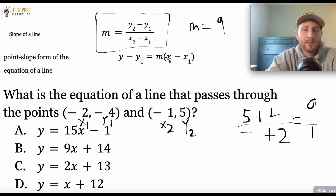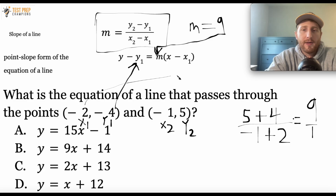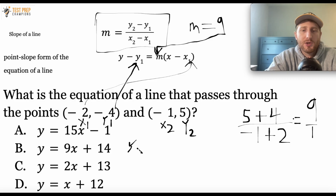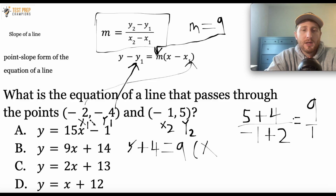Now I'll come down to the second formula and plug nine in for m, the slope. For y₁ I use negative four, and for x₁ I use negative two. So I rewrite the point-slope formula: y minus y₁ equals slope times x minus x₁. Substituting: y minus negative four — since minus a negative is plus, that's y plus four — equals nine times x minus negative two, which is x plus two.